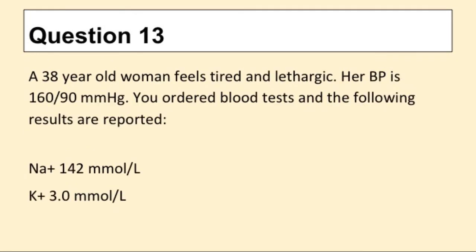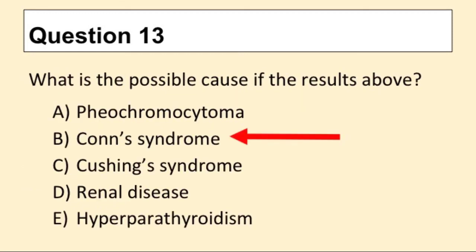Question 13. A 38-year-old woman feels tired and lethargic. Her blood pressure is 160/90. You order blood tests and the following results are reported. What is the possible cause of the results? The answer is B: Conn's syndrome.